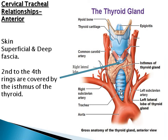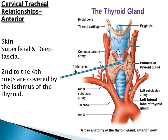In the diagram you can see the trachea in the center with its cartilages. The isthmus of the thyroid gland is in the center, with the two lobes of the thyroid on either side. The common carotid artery divides into external and internal carotid arteries. Also visible are the epiglottis, hyoid bone, thyroid cartilage, and membranes. Superficially lie the skin, superficial and deep fascia, then the strap muscles. Importantly, the second and fourth tracheal rings are covered by the isthmus of the thyroid.